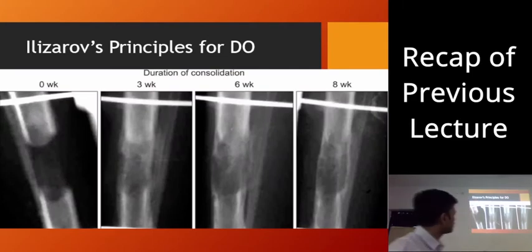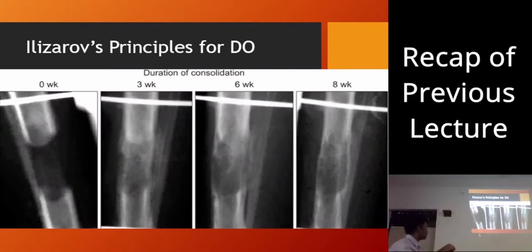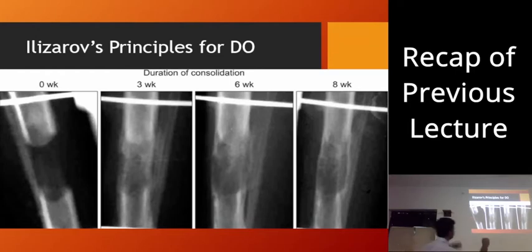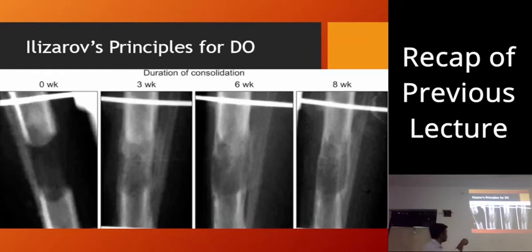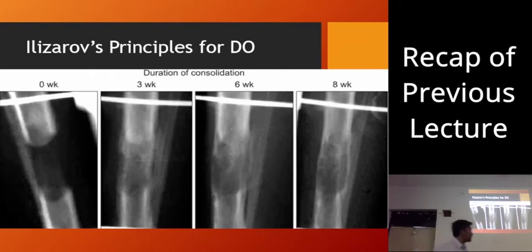This is an example where osteotomy was performed and the fibrous callus was stretched between the two bony segments. This is the tibia bone, not the mandible. We can start seeing the ossification in the bone.